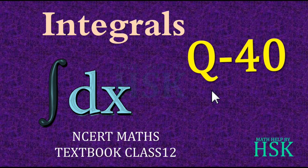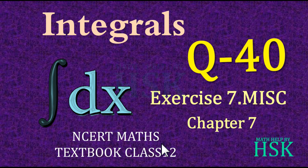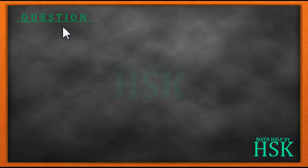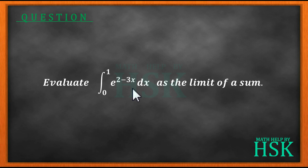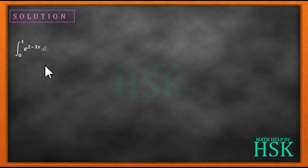Hello friends, in this video I am going to take question number 40 of the miscellaneous exercise of chapter 7 of the NCERT math textbook class 12. The chapter is Integrals. The question is: we have to evaluate this definite integral e to the power of 2 minus 3x dx from the limit 0 to 1 as the limit of a sum.